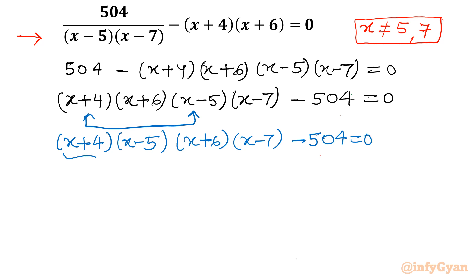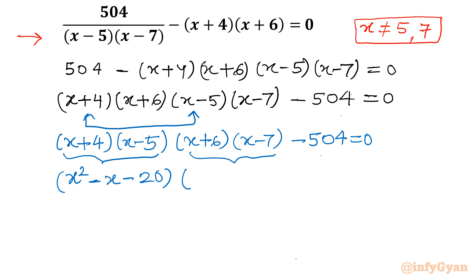Let's take the product one by one. (x plus 4)(x minus 5) gives x² minus 5x plus 4x minus 20, so x² minus x minus 20. Then (x plus 6)(x minus 7) gives x² minus 7x plus 6x minus 42, so x² minus x minus 42. Then minus 504 equal to 0.